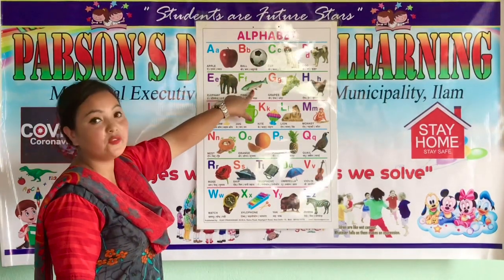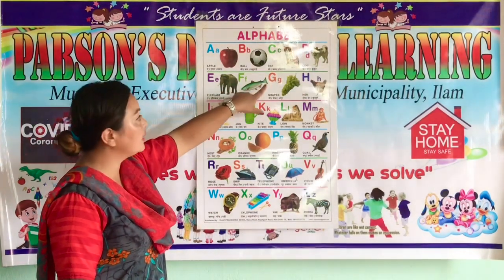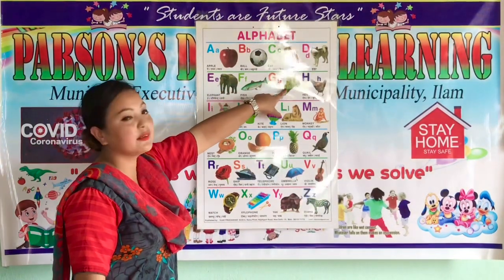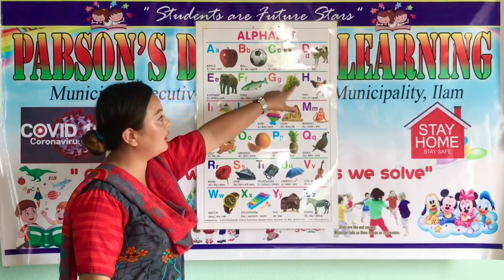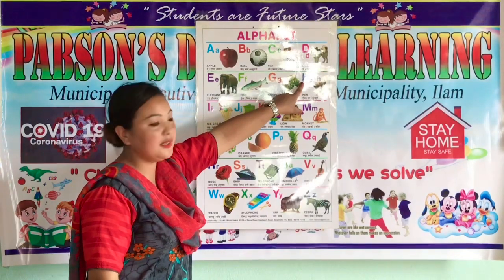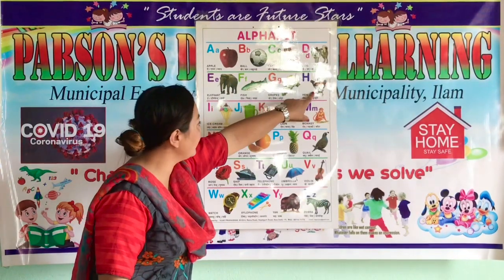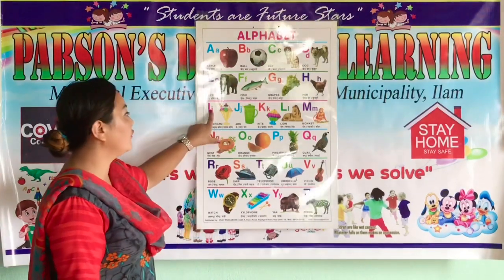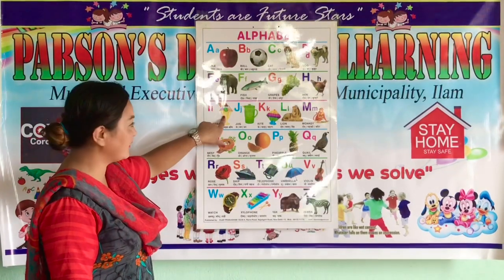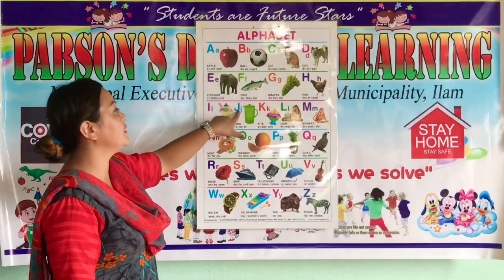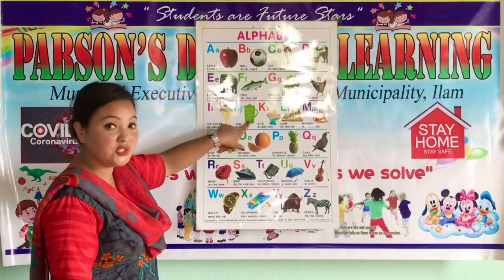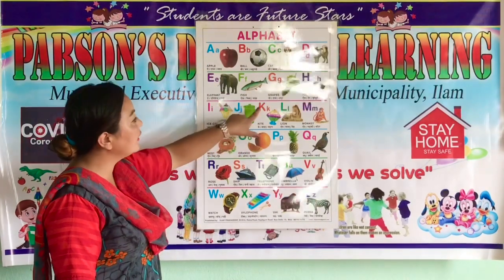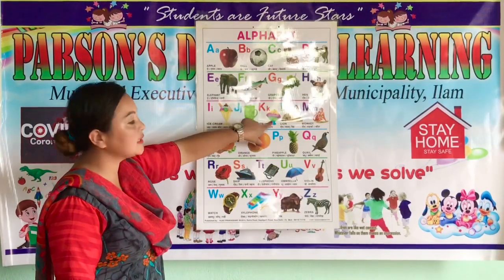F for Fish. G for Graves. H for Hint. I for Ice Cream. G for Jug. K for Guide.